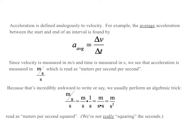Acceleration is defined analogously to velocity. For instance, the average acceleration between the start and end of an interval is given by a_average equals delta v over delta t. This is in parallel to the idea that v_average is delta x over delta t. Notice that a_average is not delta v_average over delta t. It's the change in the instantaneous velocity over time.